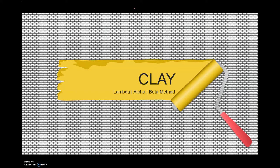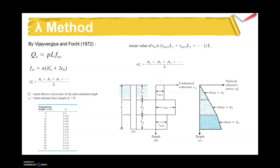Next, in analyzing shaft friction in clay soil conditions, we have three methods covered: the first is the Lambda method, the second is the Alpha method, and the third is the Beta method.